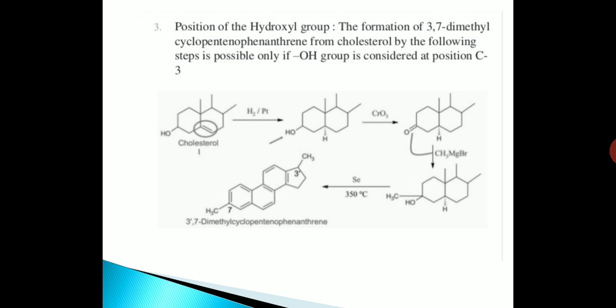Position of the hydroxyl group: The formation of 3,7-dimethyl cyclopentanophenanthrene from cholesterol by the following steps is possible if only OH group is considered at position C3. So, by this series of reaction we can confirm the position of OH group at C3.